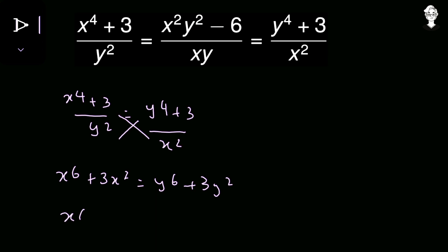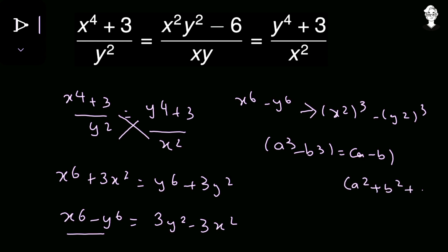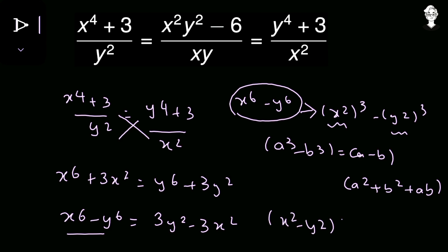Adjusting the terms: x to the power 6 minus y to the power 6 equals 3y squared minus 3x squared. Now, x to the power 6 minus y to the power 6 can be written as (x²)³ minus (y²)³. Using the identity a³ minus b³ equals (a minus b)(a² plus b² plus ab), with a = x² and b = y², this factors to (x² minus y²)(x⁴ plus y⁴ plus x²y²).